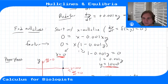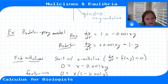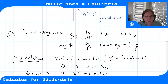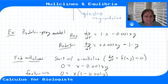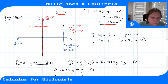The equilibrium (0, 0) represents total extinction of both species. The equilibrium (1000, 1000) is a balanced coexistence: the predation term exactly offsets prey natural growth, and the predators' hunting gains exactly balance their natural death rate. Whether trajectories move toward or away from these equilibria determines whether the populations can survive.